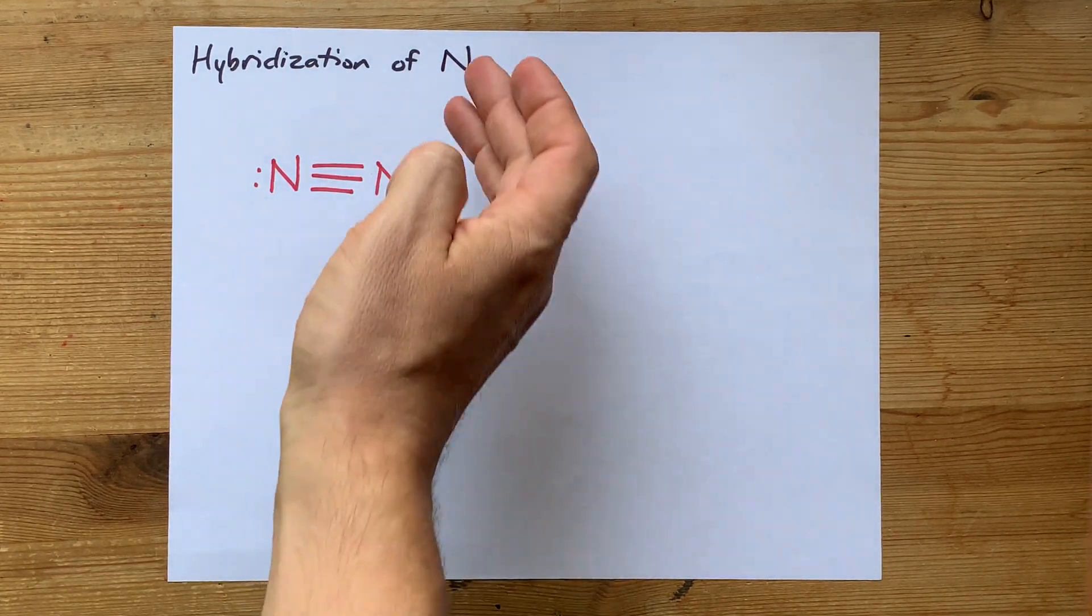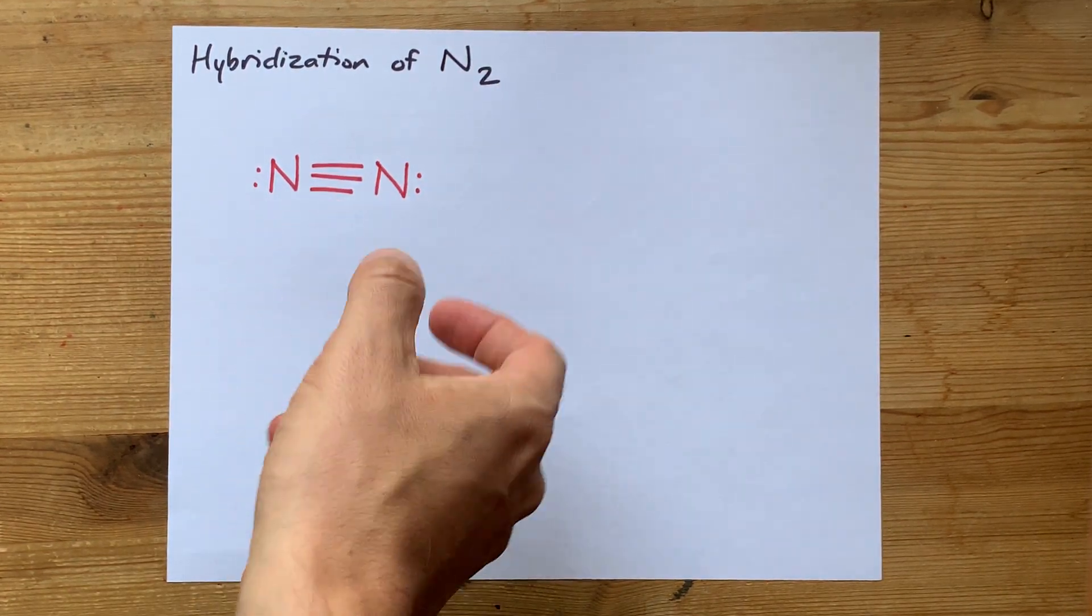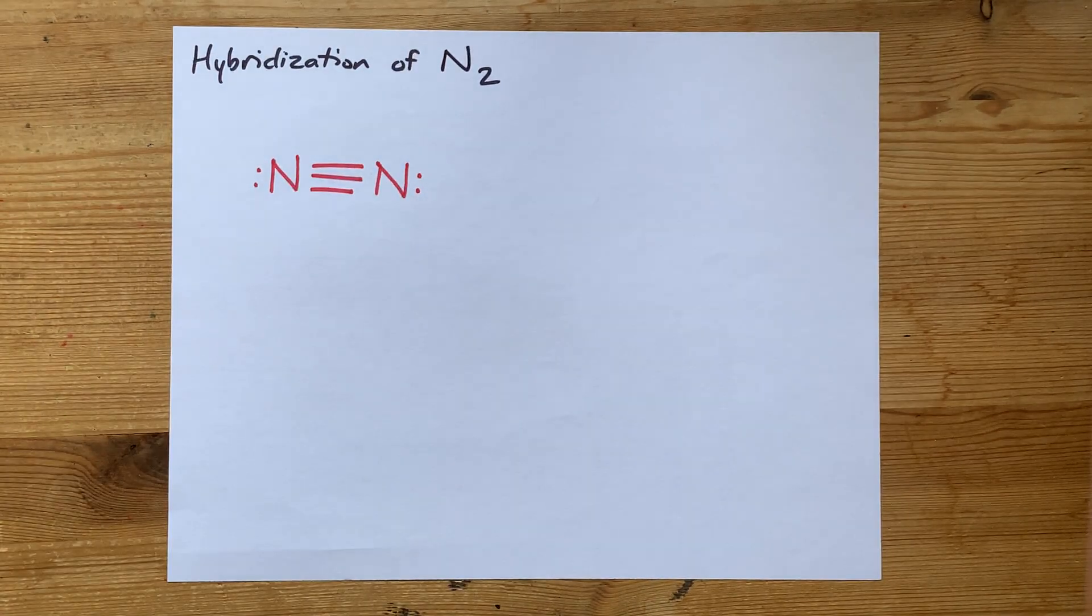What's the hybridization of N2, more specifically, each nitrogen in N2?